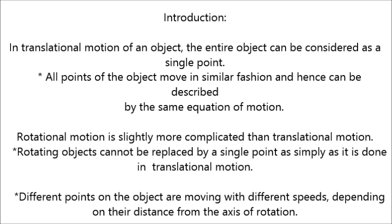Rotational motion is slightly more complicated than translational motion. Rotating objects cannot be replaced by a single point as simply as it is done in translational motion. Different points on the object are moving with different speeds depending on their distance from the axis of rotation.